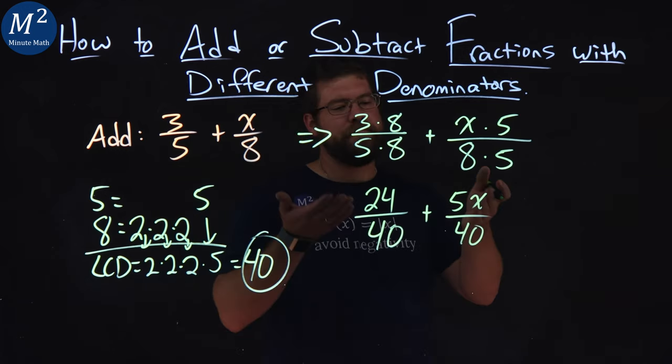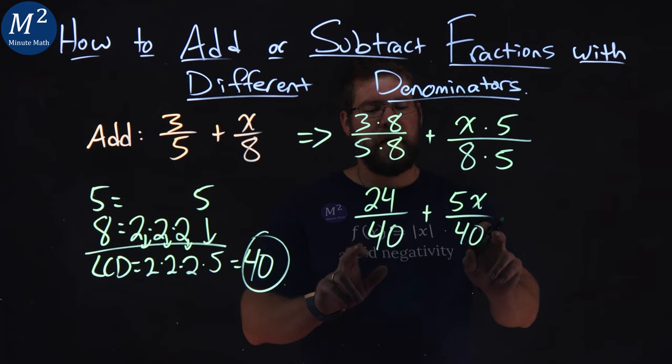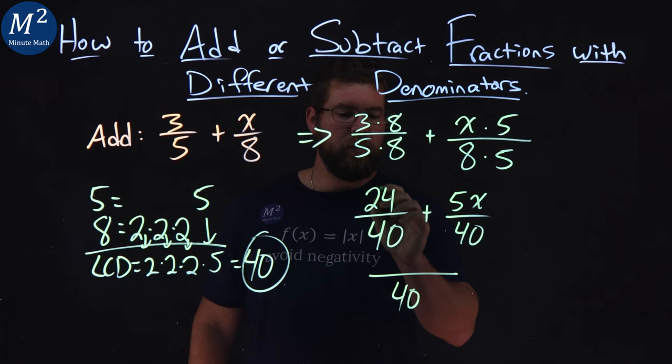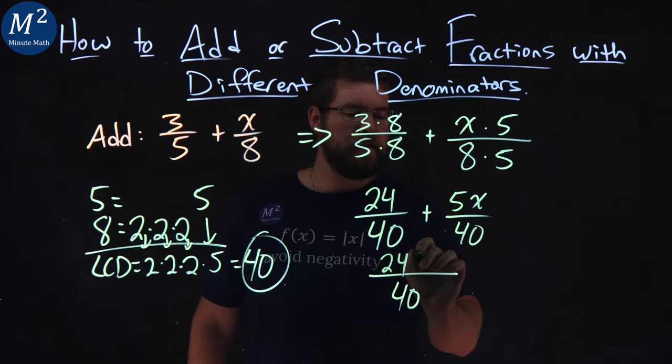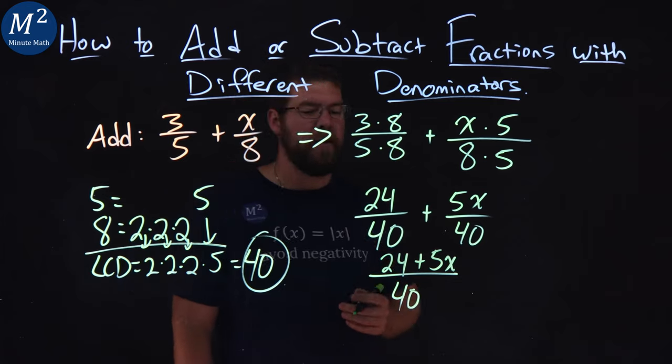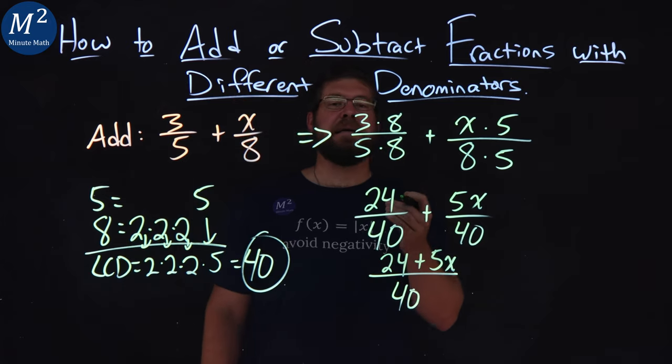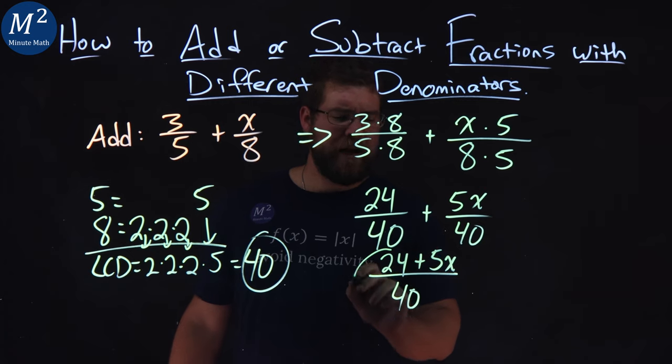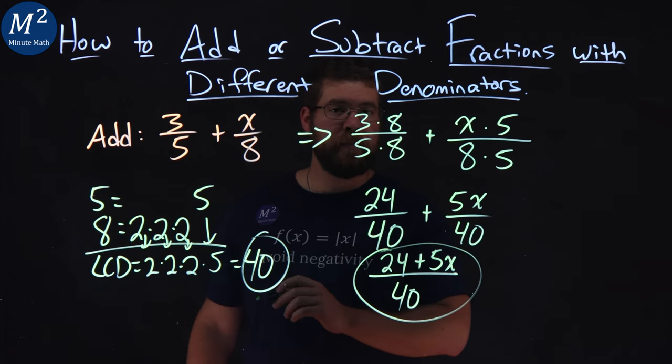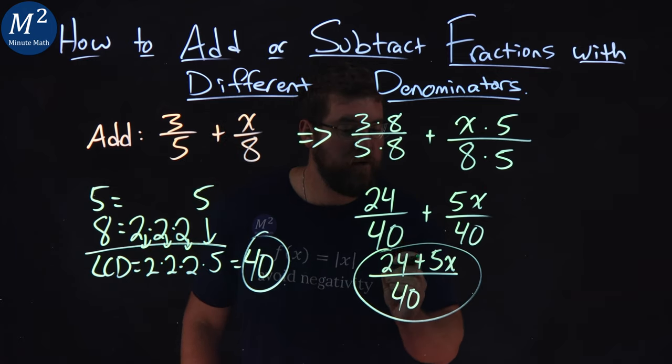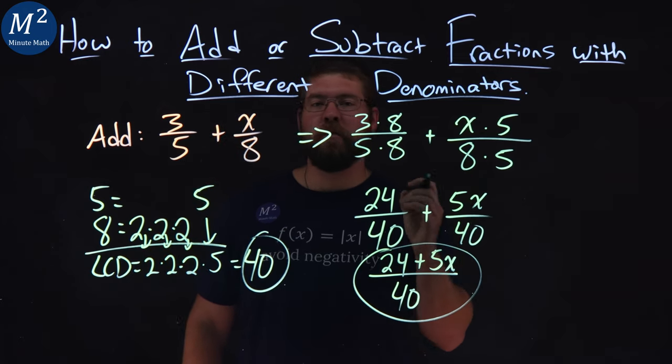From there, look, like we wanted, we have a common denominator of 40. So 40 in the denominator. Numerator is a 24 plus a 5x. Now 24 and 5x both are not like terms. So we can't combine them. So we're actually done here. Three-fifths plus an x over eight simplifies to be a 24 plus 5x over 40.